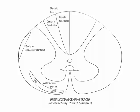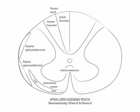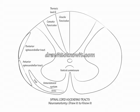Finally, label the posterior and anterior spinocerebellar tracts along the lateral wall of the spinal cord, posteriorly and anteriorly respectively. These tracts carry large sensory fibers to the cerebellum. In Friedreich's ataxia, a lateral column disorder, the posterior spinocerebellar tracts are profoundly affected. This concludes our drawing of the ascending tracts of the spinal cord.